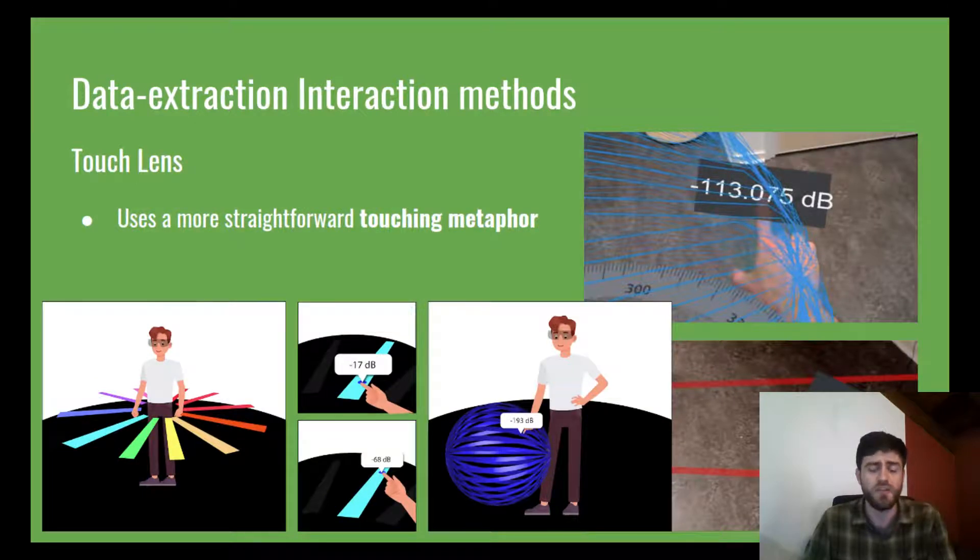Finally, the third method is called touch lens. The user is required to extend their hand onto the virtual fields, touching them. The hand position will then prompt a panel which will expose and update the field intensity at that precise location.